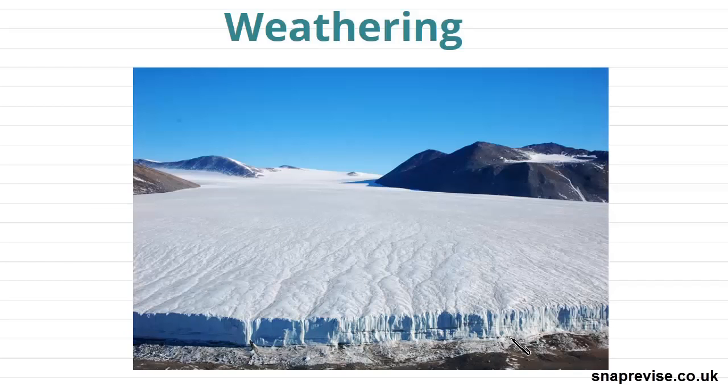So this photo here is just a picture of an ice sheet in the Antarctic and as you can see it has a very specific landscape which will differ to landscapes of glaciers in other parts of the world and we're going to look at how different forms of processes shape these landscapes to make them look the way that they do.